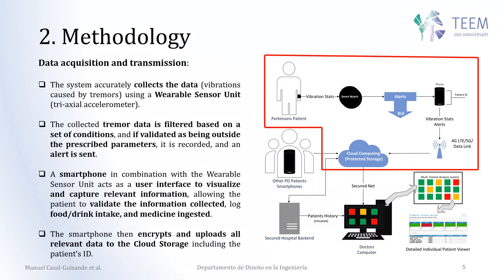A smartphone will be used in combination with the wearable sensory unit and will have several functions. The first is to serve as a user interface to capture relevant information, validate it, and also to add other data such as food intake, chewing, and medicine ingested. The other function of the smartphone is to include the data and load it to cloud storage with the patient's ID.